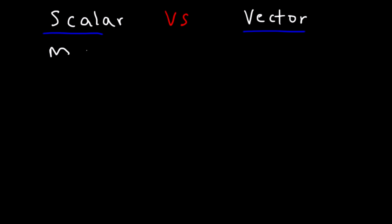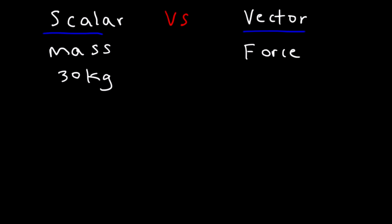For example, mass is a scalar quantity, but force is a vector quantity. If you have a mass of 30 kilograms, you can't say you have 30 kilograms directed east or 70 kilograms directed north — that doesn't make sense. The 30 kilograms is the magnitude, but there's no direction relevant to it. That's why mass is a scalar quantity.